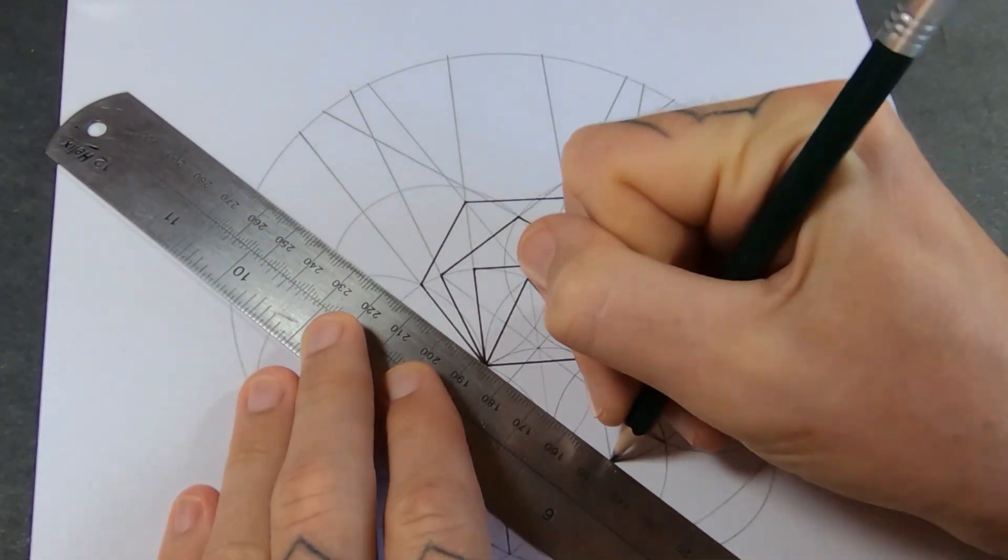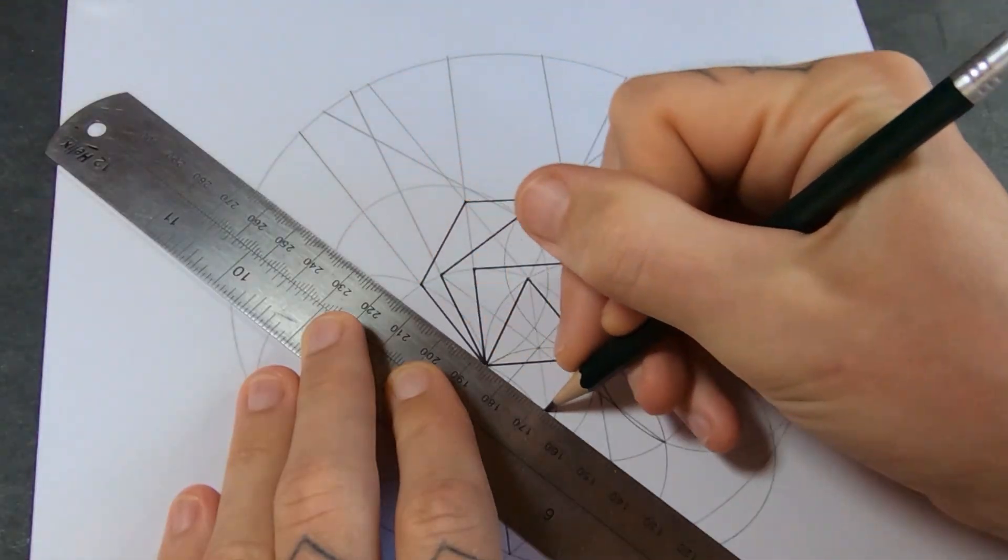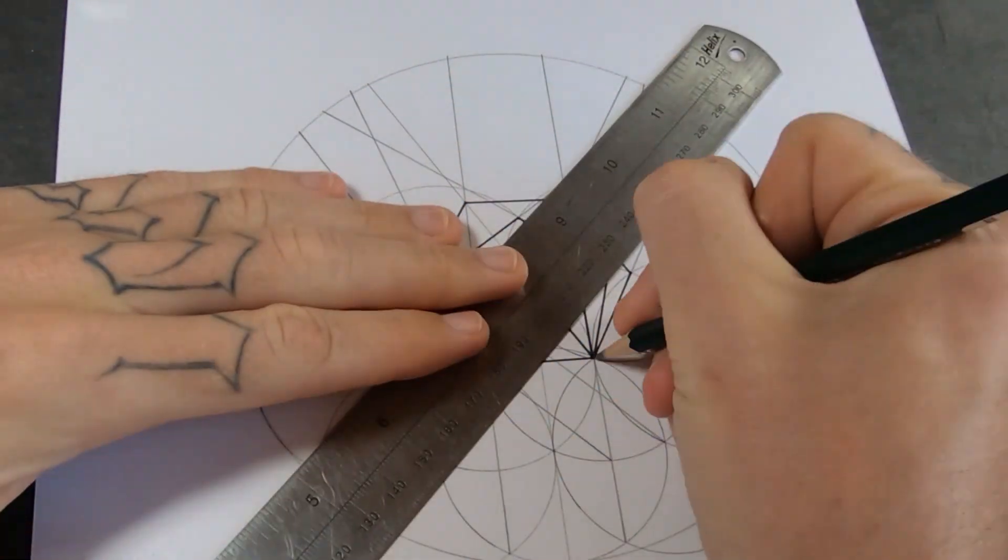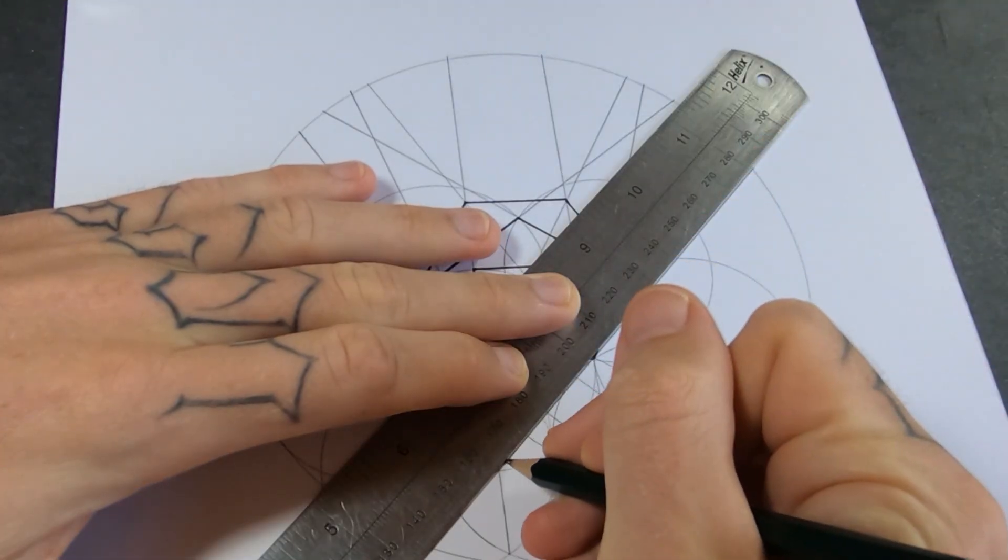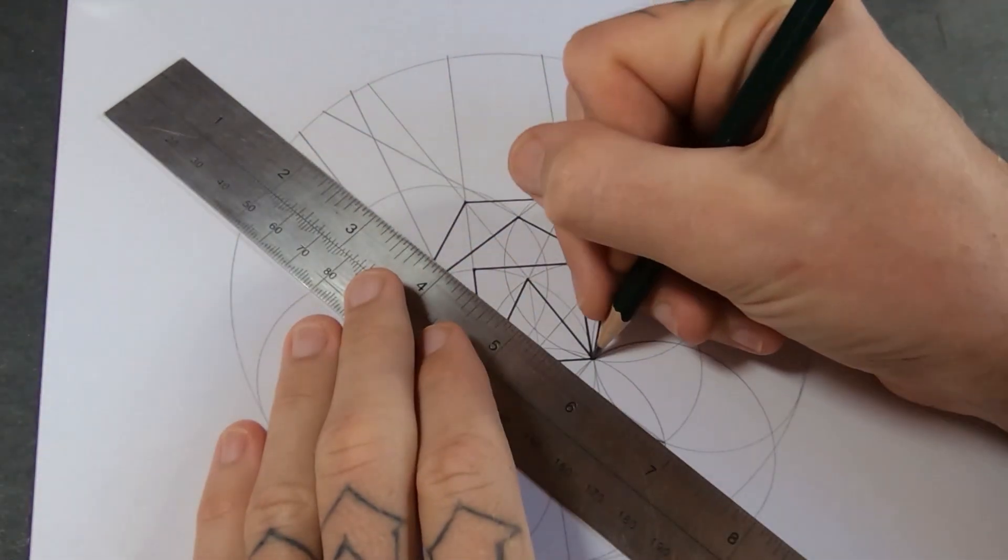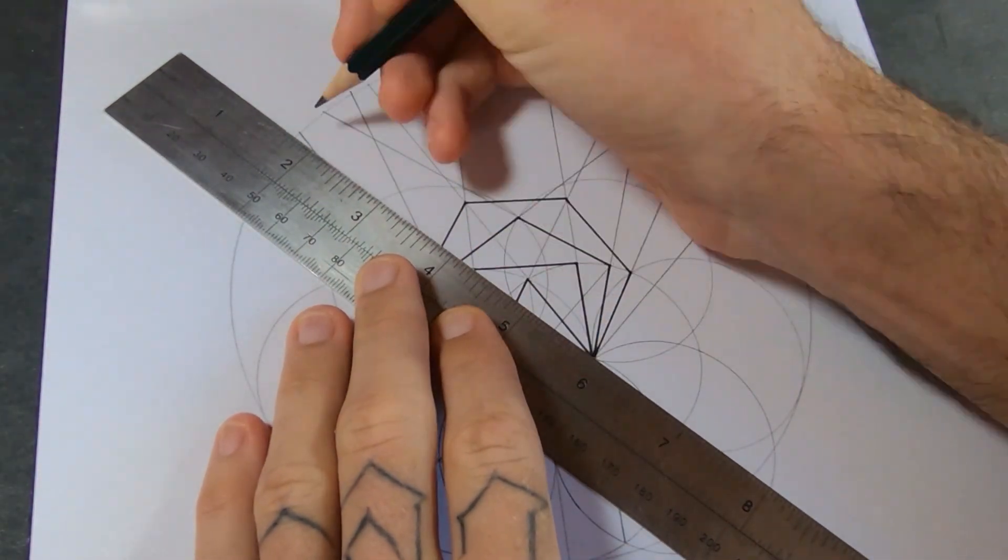Alright, now it's going to get complicated. I'll connect these intersections down here to the bottom corners of the polygons, then join the corners of the square and project the lines out.